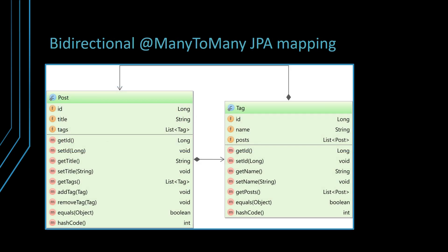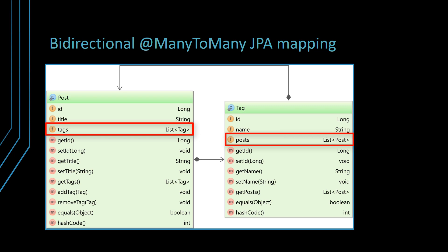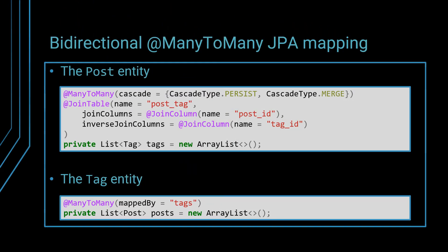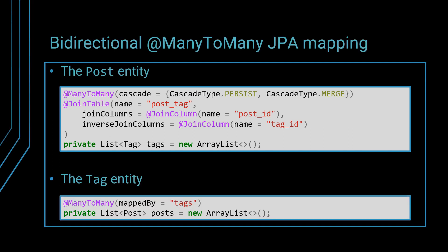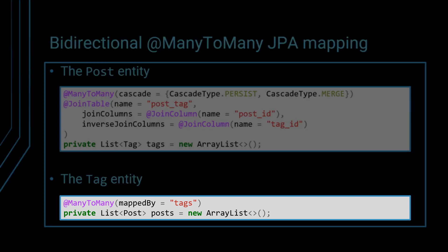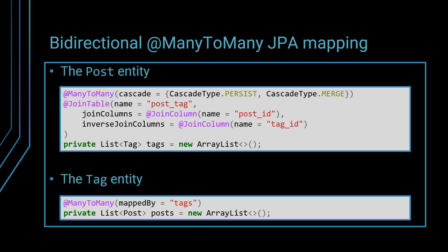In a bidirectional many-to-many association, not only the post entity maps the collection of tags, but the tag entity also maps the associated post entities. Therefore, you can navigate the many-to-many association in both directions. Mapping the bidirectional many-to-many association requires adding the @ManyToMany annotation on both ends. For the post entity, the mapping is identical to the unidirectional many-to-many association example we have previously seen. However, unlike the unidirectional many-to-many association, the tag entity maps the associated post entities using the @ManyToMany annotation with the mappedBy attribute set. Because only one side can control the bidirectional association, one end will use the mappedBy attribute to indicate that this particular side is to be skipped when synchronizing the state of the JPA entities with the relational database.